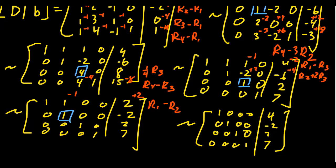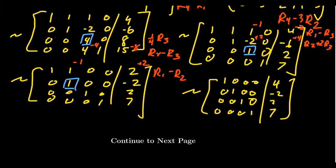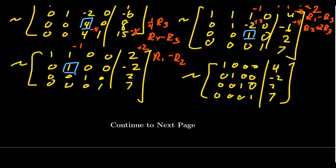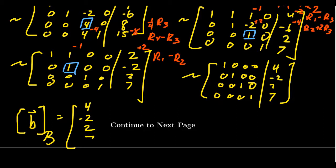And so notice what we have here. The first coefficient in the linear combination should be 4. The second coefficient should be -2. The third coefficient should be 2. And the fourth coefficient should be 7. So then we have our answer, what we're looking for, the coordinate vector of b with respect to these B coordinates. This is the vector [4,-2,2,7].